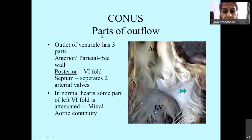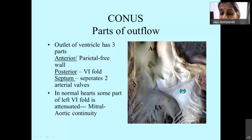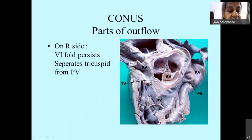Looking at the outflow of the ventricles, the outlet has three parts: one anterior or the parietal free wall, the posterior septum which is the ventricular infundibular fold separating the two arterial valves, and in normal hearts on the left side, some part of the ventricular infundibular fold gets attenuated, giving you mitral-aortic valve fibrous continuity. On the right side the ventricular infundibular fold persists, giving pulmonary-to-tricuspid valve discontinuity.